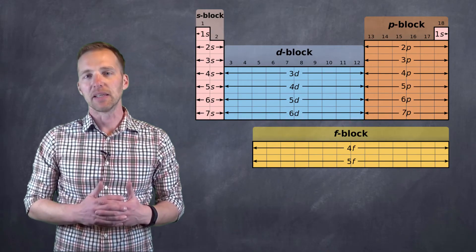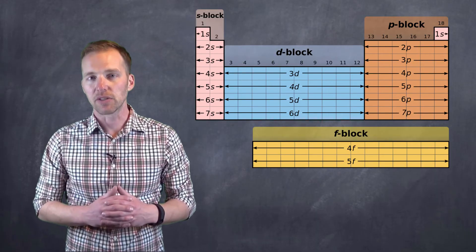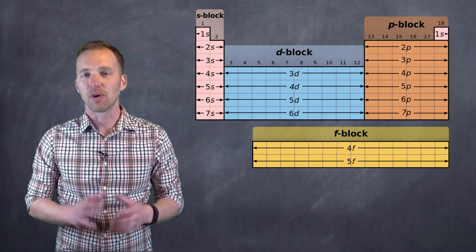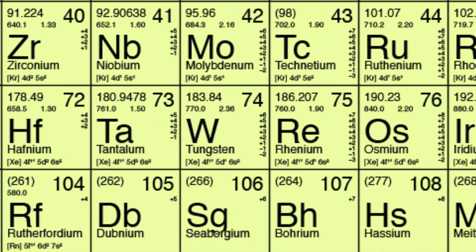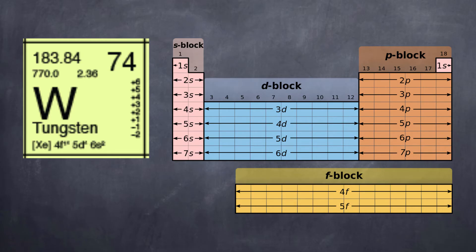Using the periodic table represented this way, we can start to assign electron configurations. First, we figure out how many electrons we're going to represent. If we take a look at tungsten, its atomic number is 74, indicating it has 74 protons, and for the neutral element, 74 electrons. We have to account for all 74 electrons. We use a method called the Aufbau Principle, which states that we fill sublevels in sequential order, starting with hydrogen.